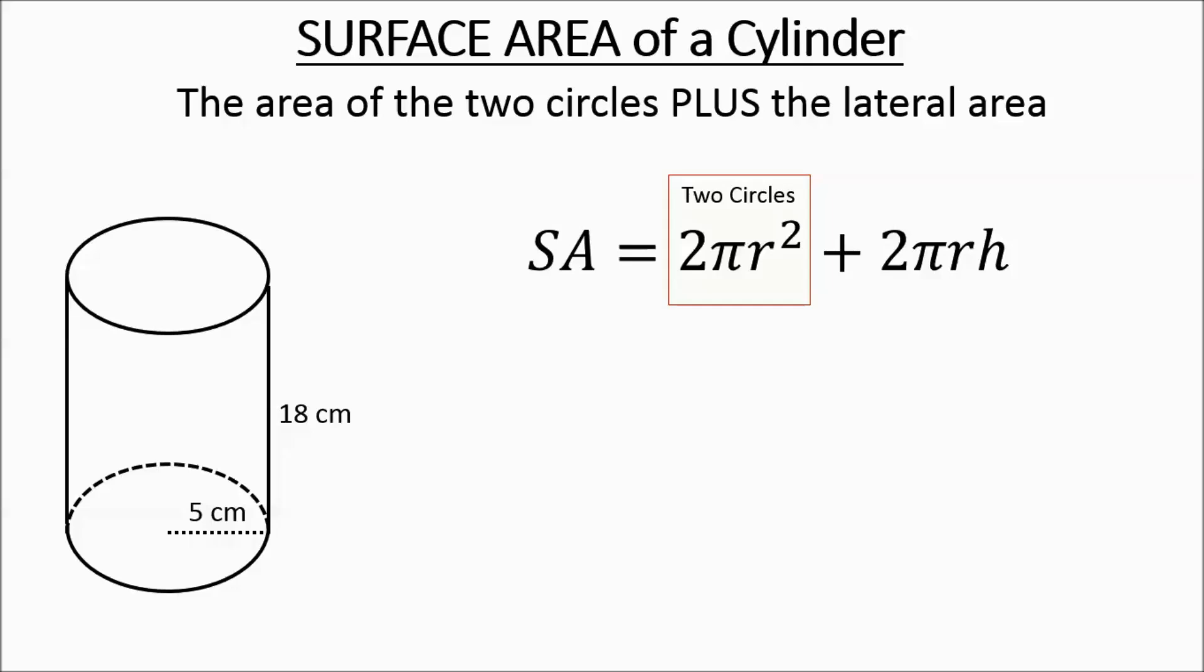If you remember from previous years, pi r squared is the area of a circle, and we're doubling it since there's two circles. The 2 pi r h takes care of the rectangle. That's the lateral area.